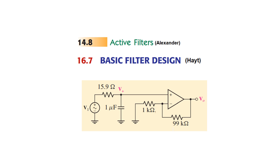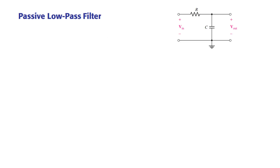Bismillahirrahmanirrahim. This video is about active filters. Let's start from the passive low-pass filter. From the diagram you can see the capacitor. When the input frequency is low, the capacitor will behave like an open circuit — something divided by zero frequency becomes infinity, so it becomes open. Whatever is the input will go to the output. At high frequency the capacitor becomes a short circuit, so the input signal passes through and nothing goes to the output.